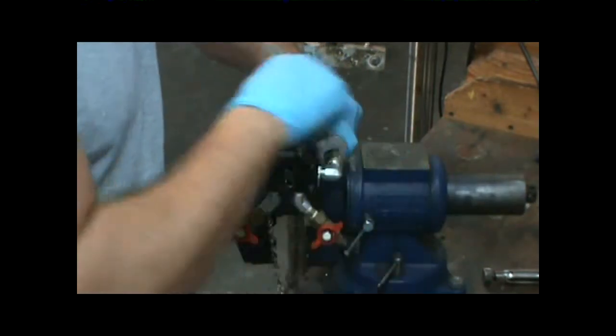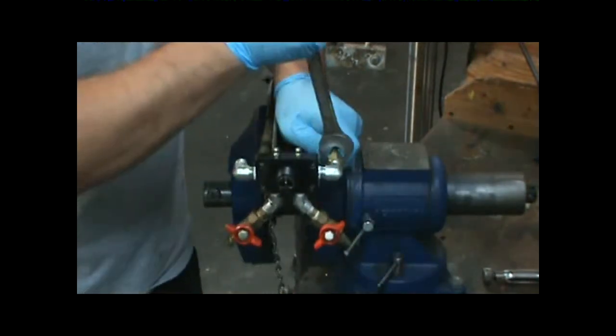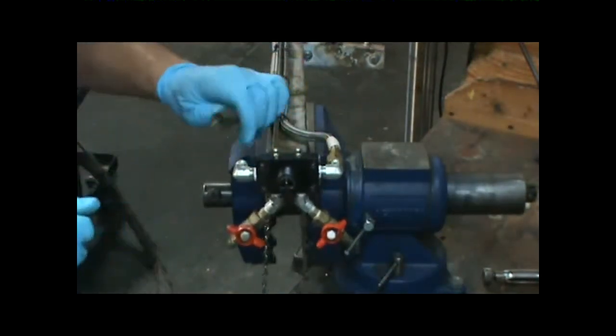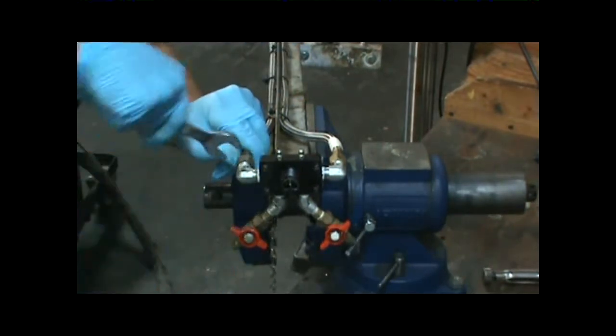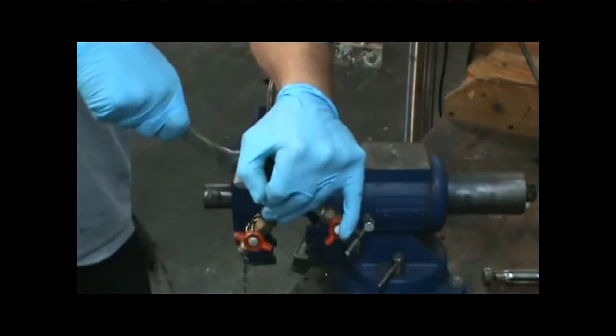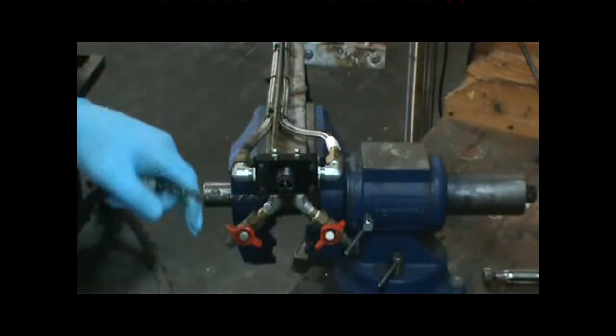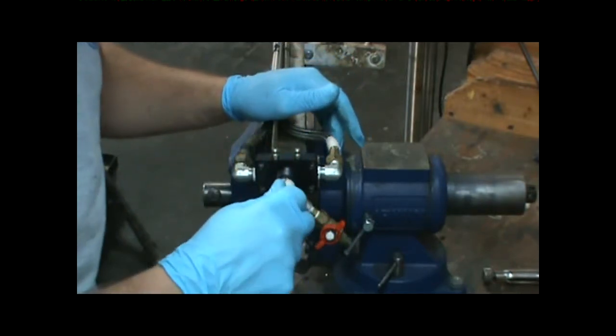Tightening the hoses back onto the elbows with an 11/16ths wrench. You want this pretty snug. I'm going to go ahead and reinstall the nightcap and the retaining nut.